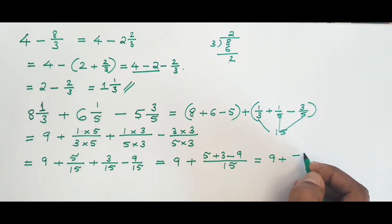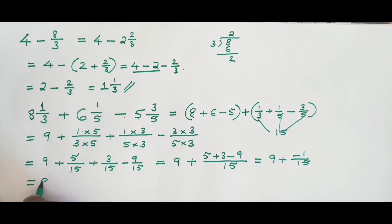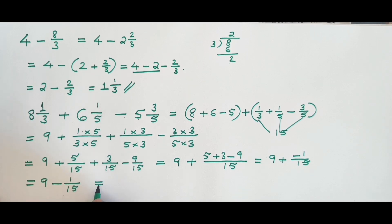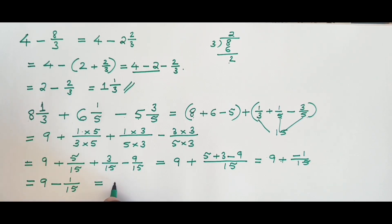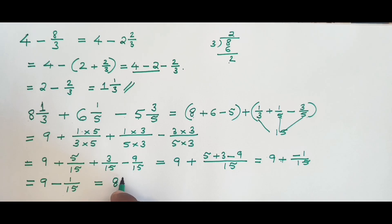We now have 9 minus 1 over 15. Using the shortcut for integer minus proper fraction: write 8 (one less than 9), take the difference between 15 and 1, which is 14, and write the denominator 15. The final answer is 8 and 14 over 15.